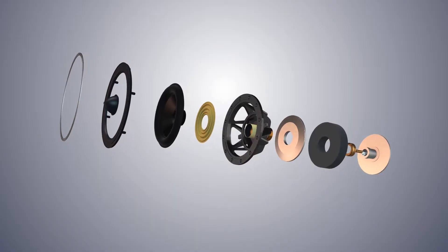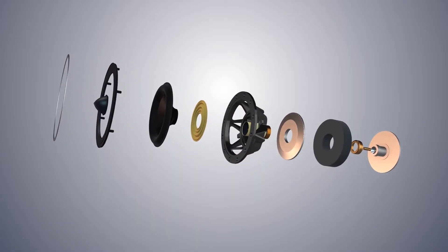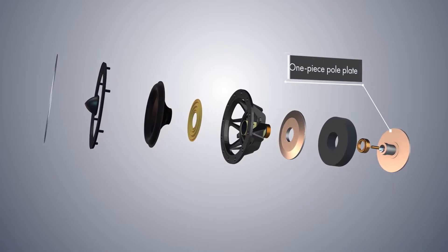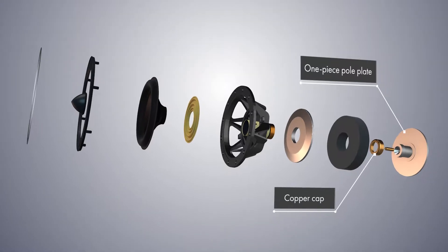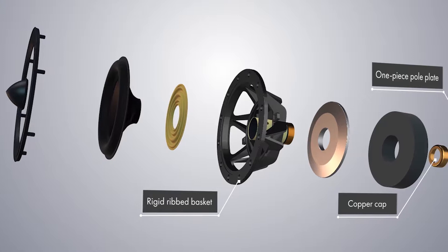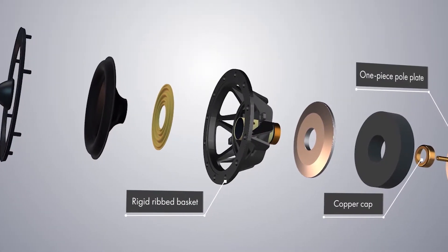And these cones are driven by copper clad aluminium coils surrounding a specially shaped one-piece pole plate fitted with a copper cap. And that reduces inductance and linearizes the magnetic flux. This is all held together by a rigid ribbed basket with a large open area behind the cone.